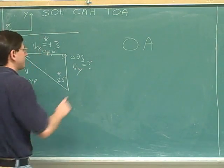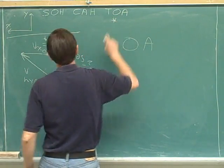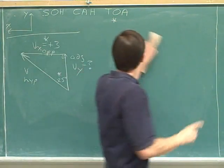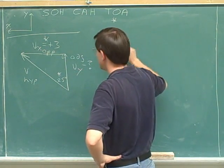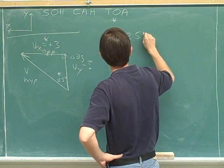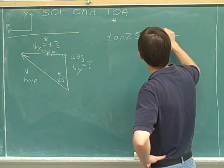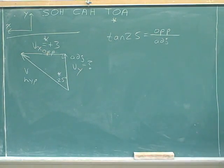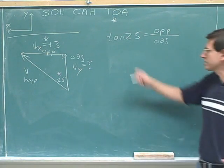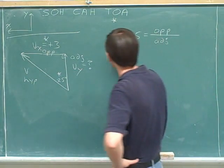So I'm going to use tangent. Tangent of 25 degrees equals opposite over adjacent. TOA tangent is opposite over adjacent.